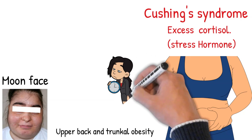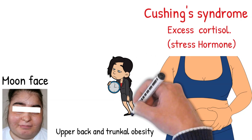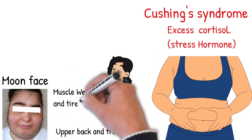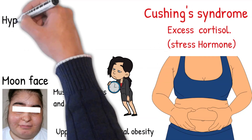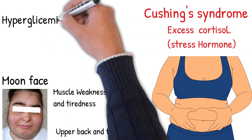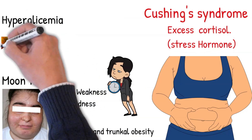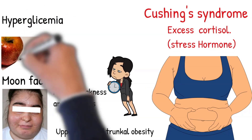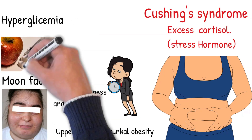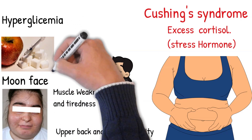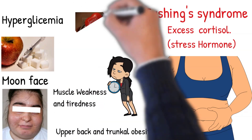Muscle weakness occurs because cortisol breaks down muscles in the extremities, leading to thin extremities. Degrading muscles supply amino acids, for example alanine, for gluconeogenesis — creating glucose — which produces hyperglycemia and diabetes mellitus.